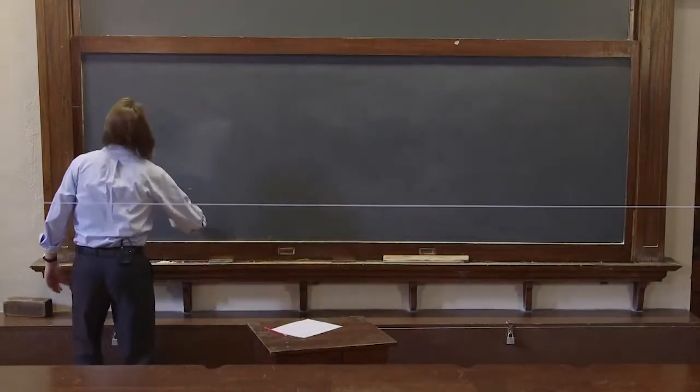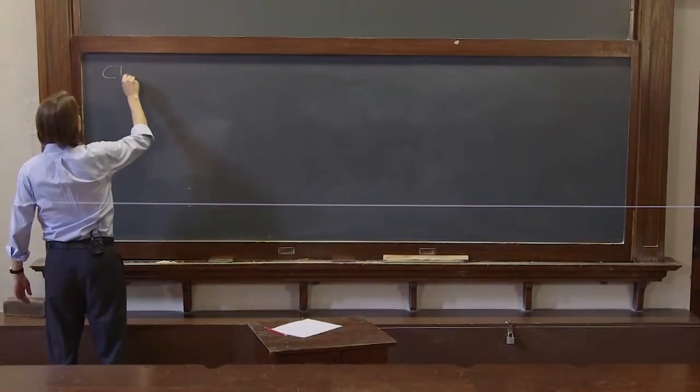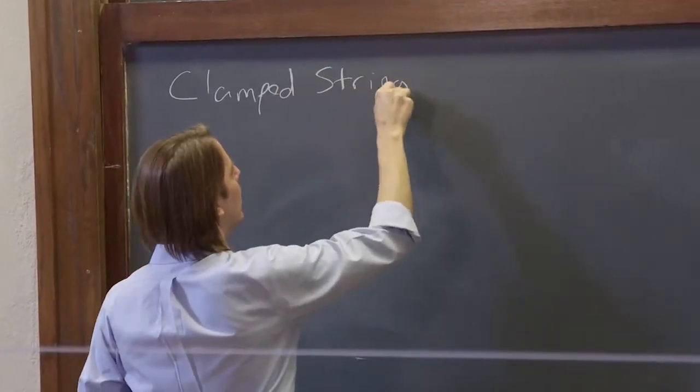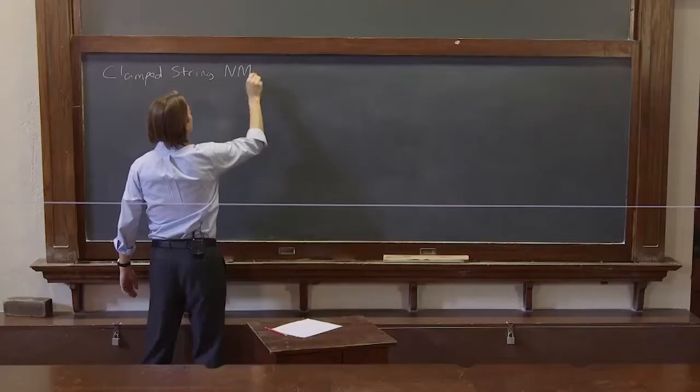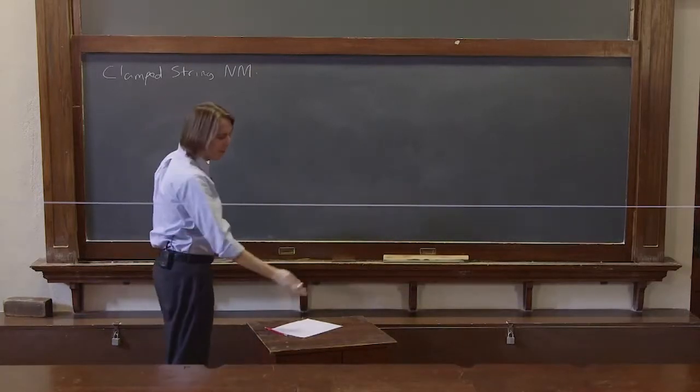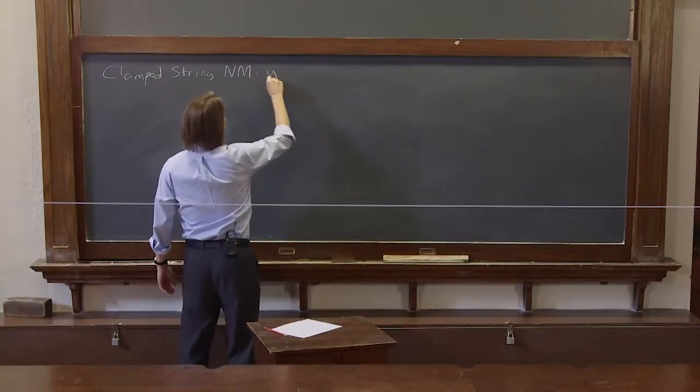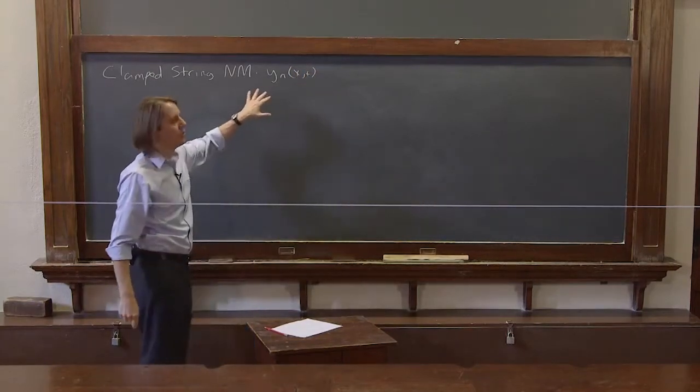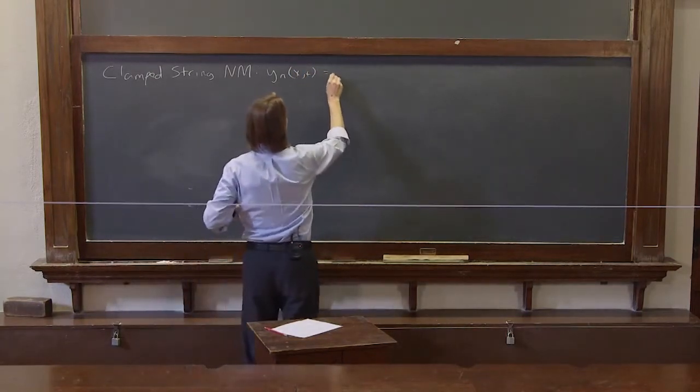Now we're going to look at these clamped string normal modes in the real world. But let's go ahead and write the equation down again. y_n(x,t), because we decided there are discrete numbers of these normal modes.